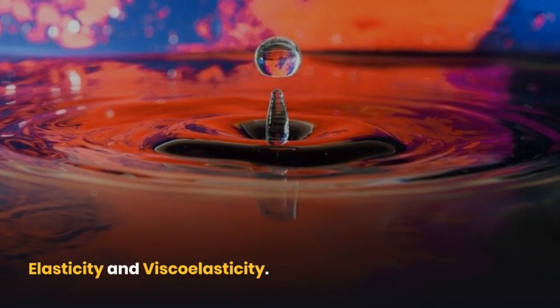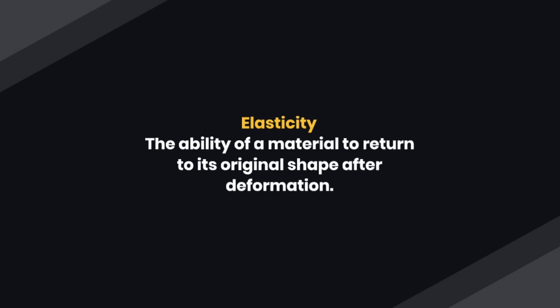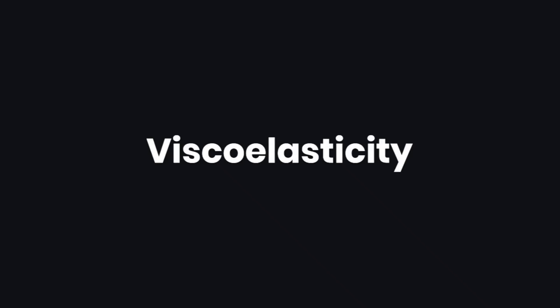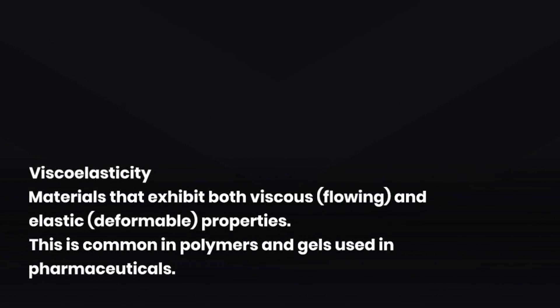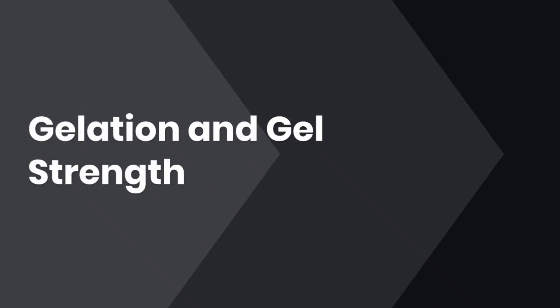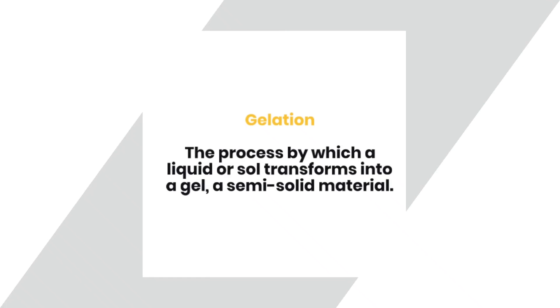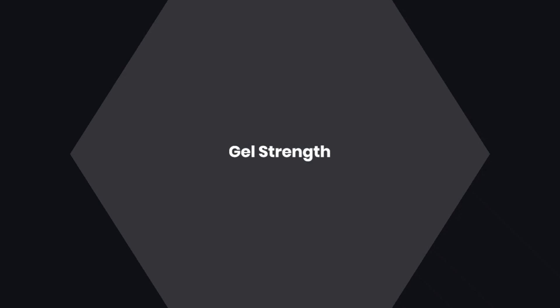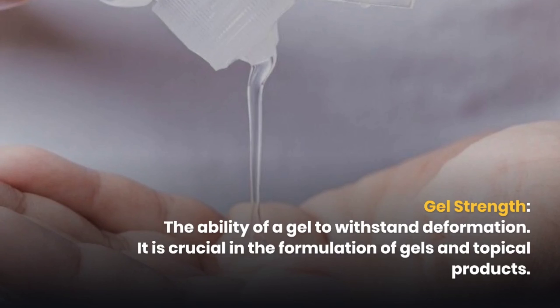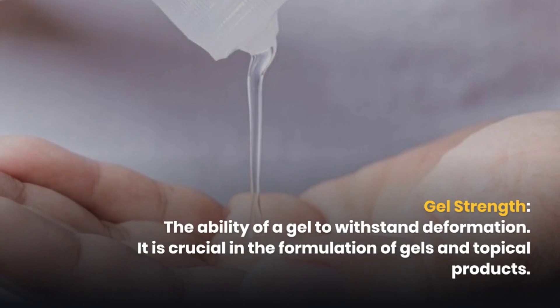The next concept is elasticity and viscoelasticity. Elasticity is the ability of a material to return to its original shape after deformation. Viscoelasticity describes materials that exhibit both viscous (flowing) and elastic (deformable) properties — this is common in polymers and gels used in pharmaceuticals. Related to this is gelation and gel strength: gelation is the process by which a liquid or sol transforms into a gel, a semi-solid material. Gel strength is the ability of a gel to withstand deformation, and it is crucial in the formulation of gels and topical products.